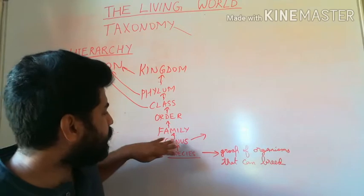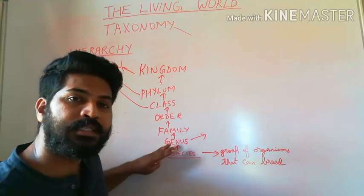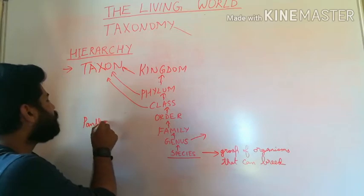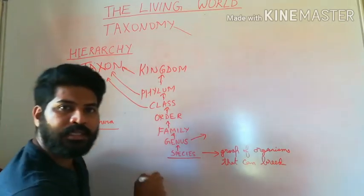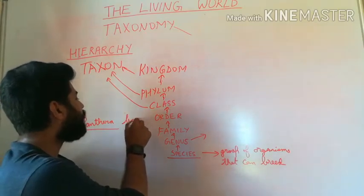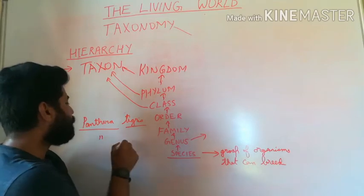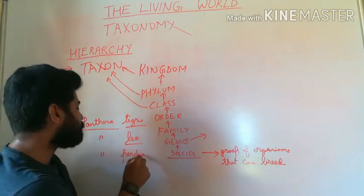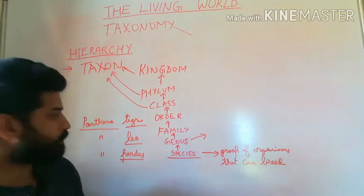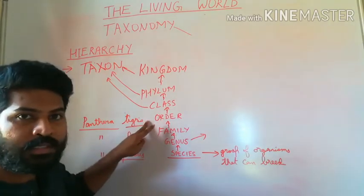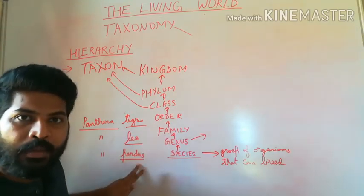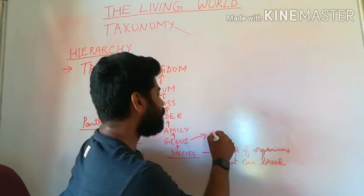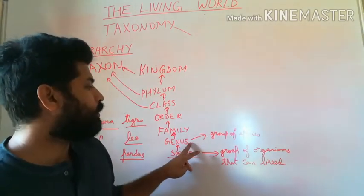The next level of organization is genus. Species are placed under genus, and a genus can have many species. For example, Panthera is the name of a genus. Under the genus Panthera we have Panthera tigris (tiger), Panthera leo (lion), and Panthera pardus (leopard). All three are different species, but all are placed together in the same genus Panthera. So a genus is a group of related species, and similarities between one genus and another are comparatively less.